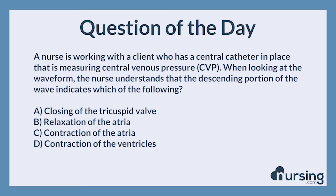Again, a nurse is working with a client who has a central catheter in place measuring central venous pressure, CVP. When looking at the waveform, the nurse understands that the descending portion of the wave indicates which of the following? A. Closing of the tricuspid valve. B. Relaxation of the atria. C. Contraction of the atria. D. Contraction of the ventricles. The correct answer is B.